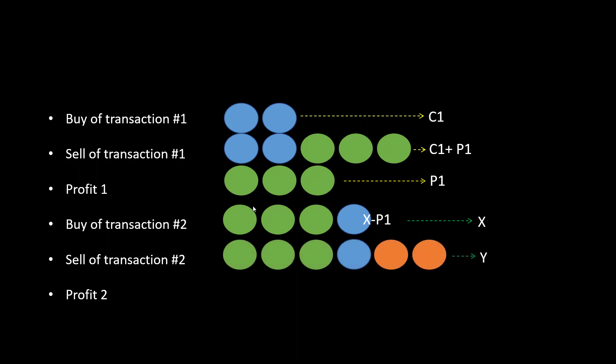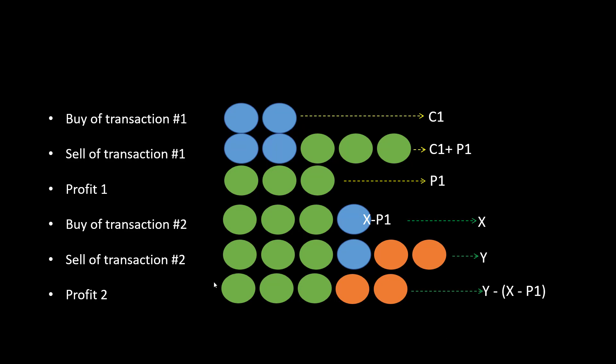If you then sell this stock at say 6, your profit will be the sell price minus the effective buy price, which gives Y minus X minus P1. This was the effective buy price, making this profit the accumulated profit from all transactions up to this point. That's the concept of effective buy price and how you accumulate profit by iterating through all transactions to reach the total profit from every transaction made.